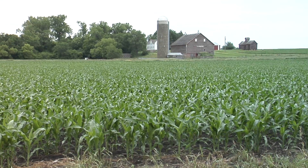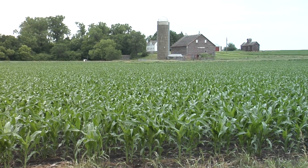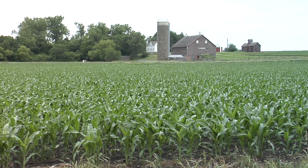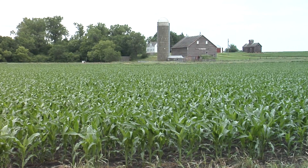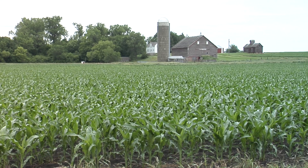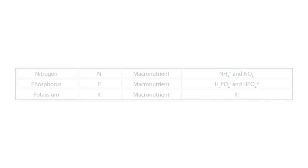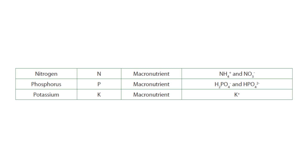Another way of classifying nutrients is by the amount of nutrient that is required by the plant. Nutrients that are required in large amounts, such as nitrogen, phosphorus and potassium, are classified as macronutrients.